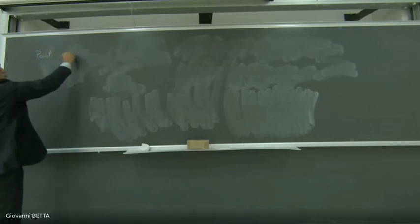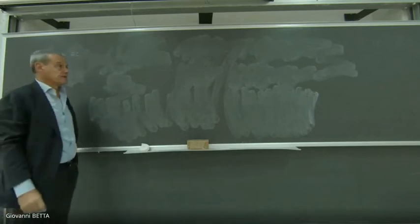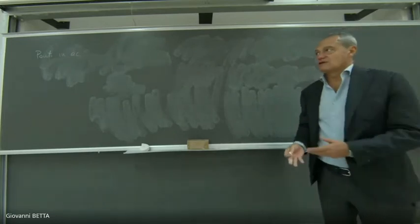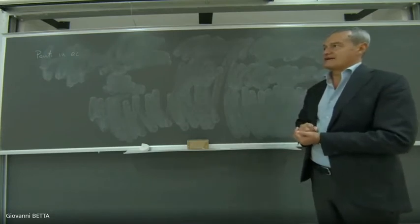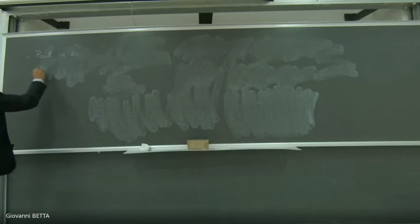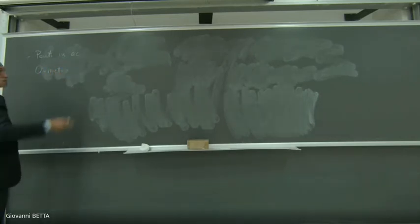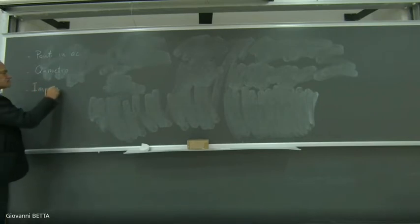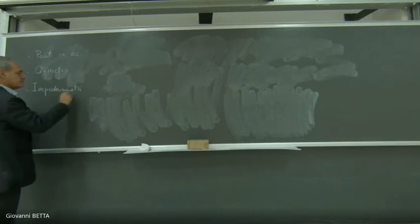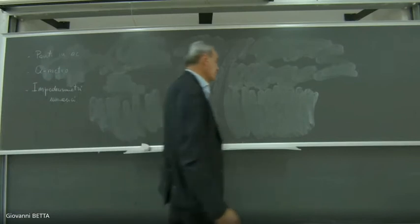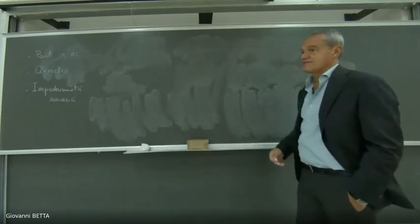Abbiamo i ponti in AC — ponti in alternata — perché ovviamente quando si fa una misura di impedenza, questa ha un significato in funzione della frequenza in cui ci si trova ad operare. Abbiamo poi il Q-metro, che ci consente di misurare resistenze, induttanze e capacità — parametri serie e parallelo — analogamente agli altri dispositivi. E poi abbiamo la famiglia degli impedenzimetri numerici.